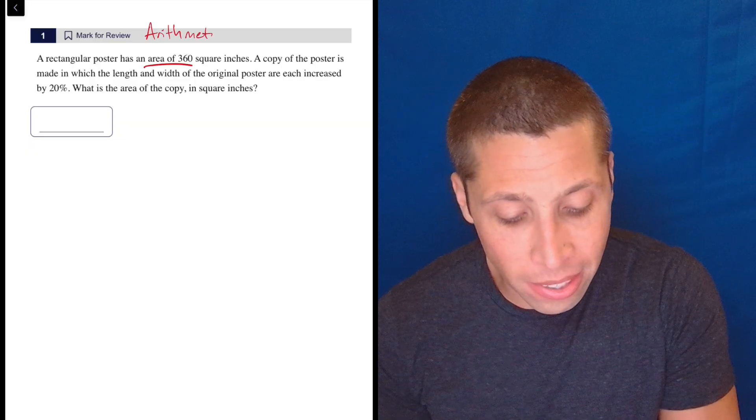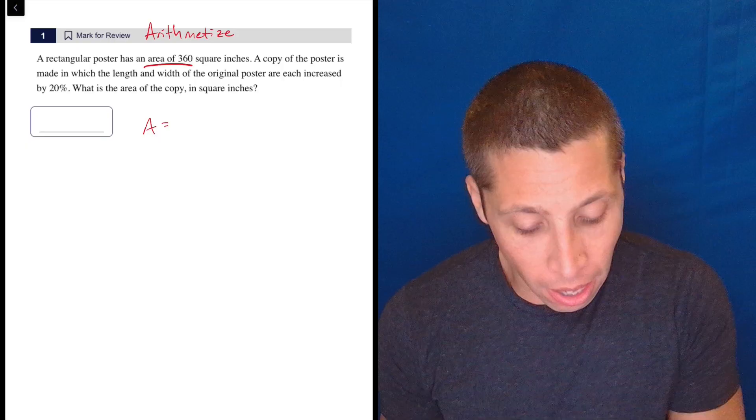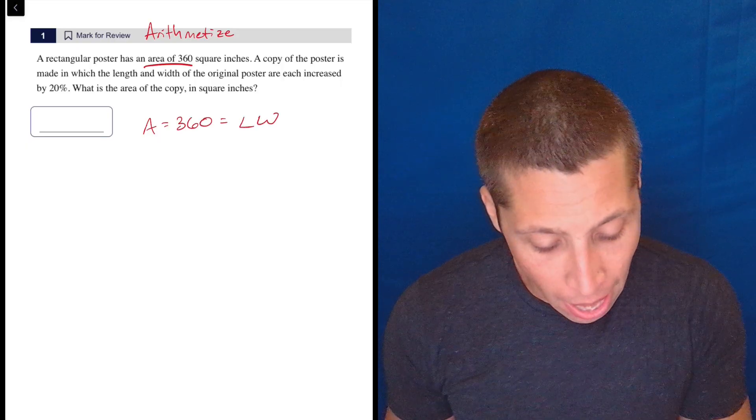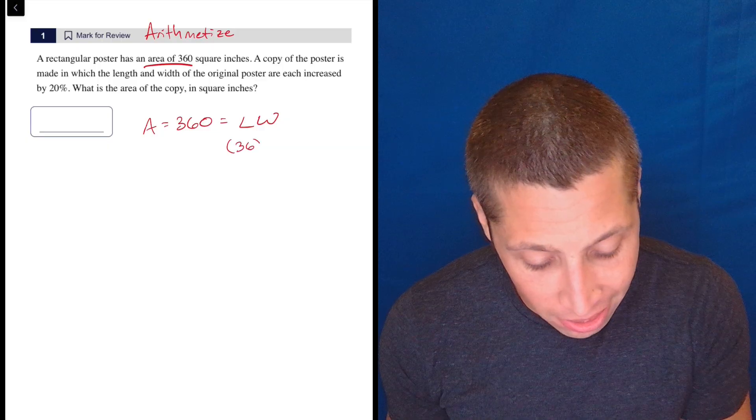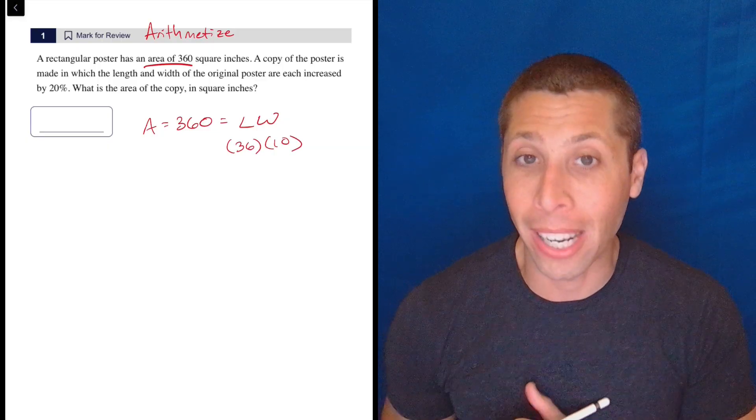To me, this is an obvious case where I'm going to arithmetize. So the area of my thing is 360. That's the length times the width. For simplicity's sake, I'm going to say the length is 36 and the width is 10, right? Because 36 times 10 is a very easy way to get 360.